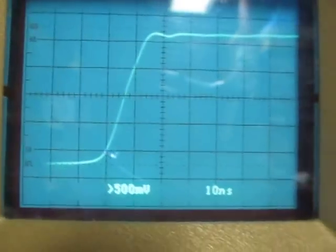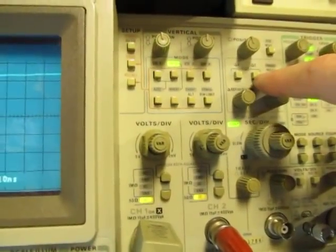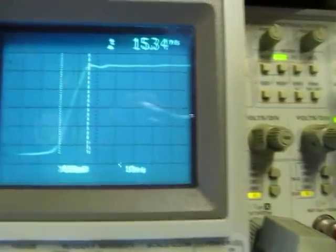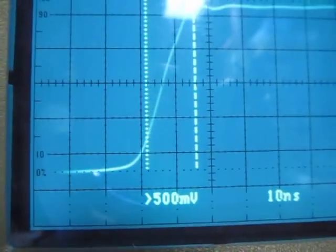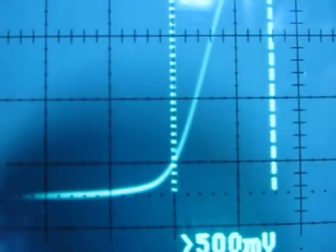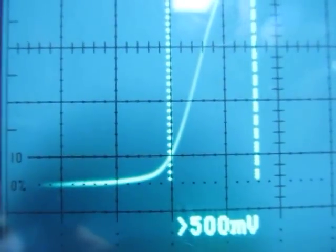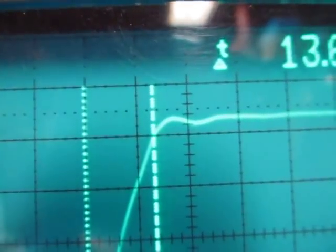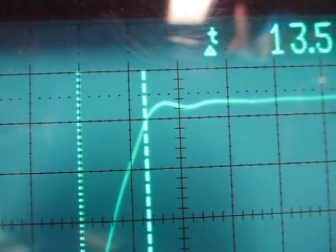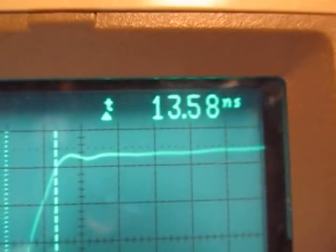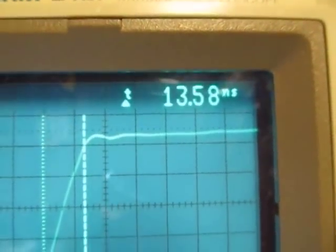Now this scope here also has a set of cursors I can turn on. By turning those cursors on, I can actually position those now at that crossing point, right where we're crossing the 10% point, and this one we'll position right over here where we're crossing the 90% point. That shows about 13.58 nanoseconds.